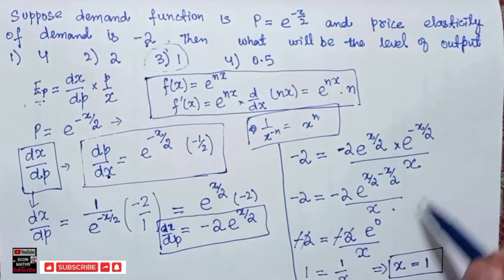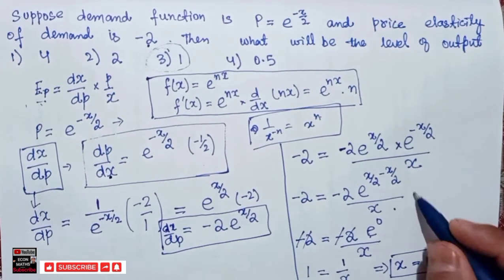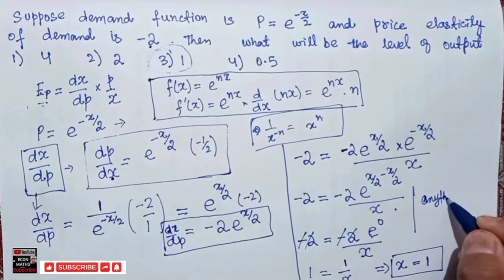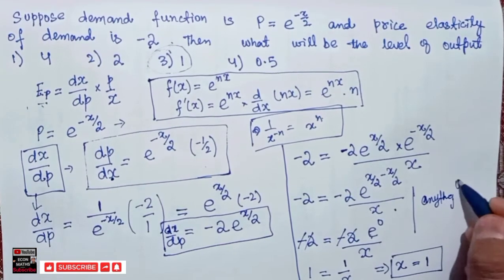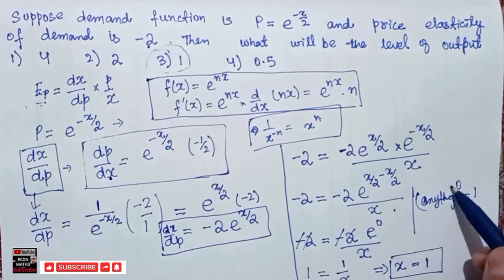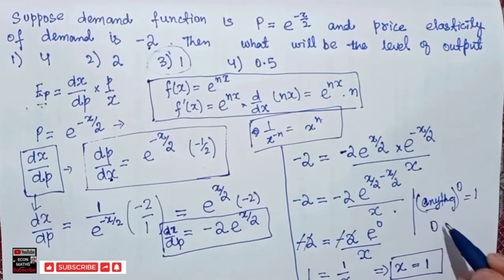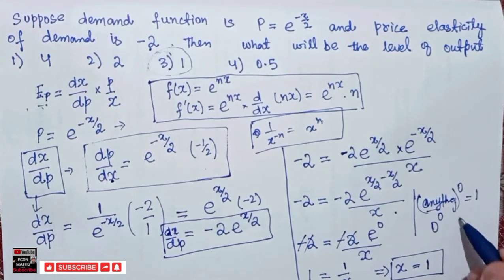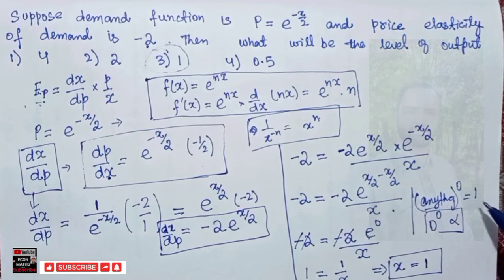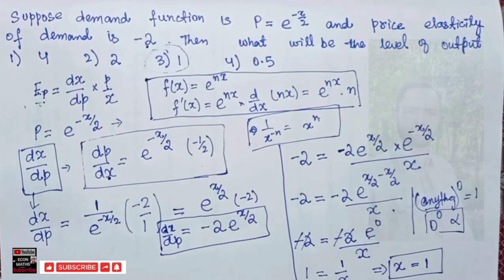Here e to the power 0 equals 1 because anything raised to the power 0 is equal to 1. By anything, we mean any number — it should not be 0, because 0 to the power 0 is not defined. Except for that case, any number raised to the power 0 equals 1. I hope I made myself clear. Thank you.